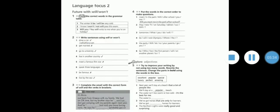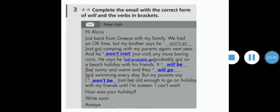Exercise number three: complete the email with the correct form of will and the verbs between brackets. So again, you're going to fill in the blanks with will or won't and the correct form of the verb. From the beginning: Hi Alicia, just came to visit with my family. We had an okay time, but my brother says he won't go camping with my parents again next year, and he won't visit any more boring ruins. He says he will probably go on a beach holiday with his friends. It will be sunny and warm and they will go swimming every day. And here are the rest of the items.